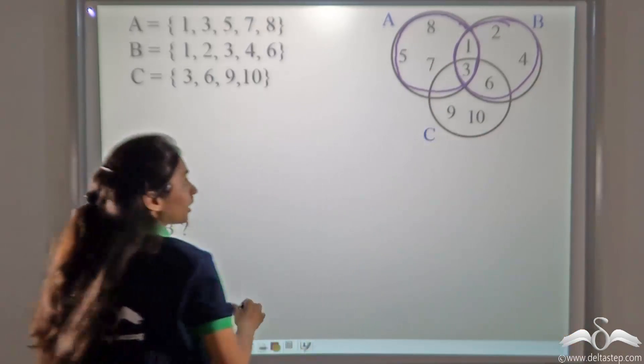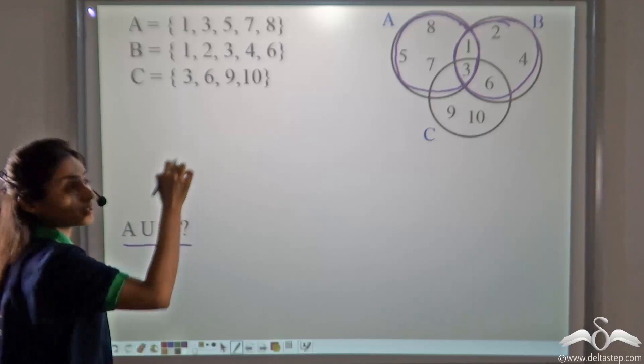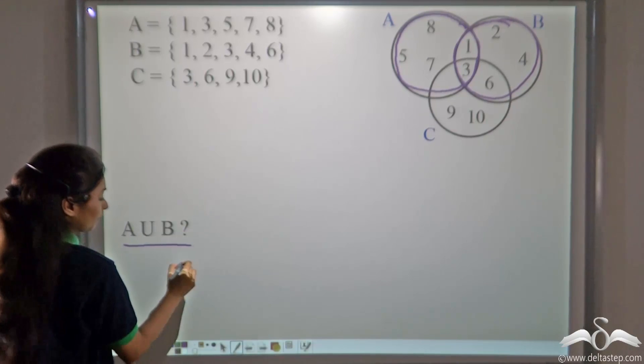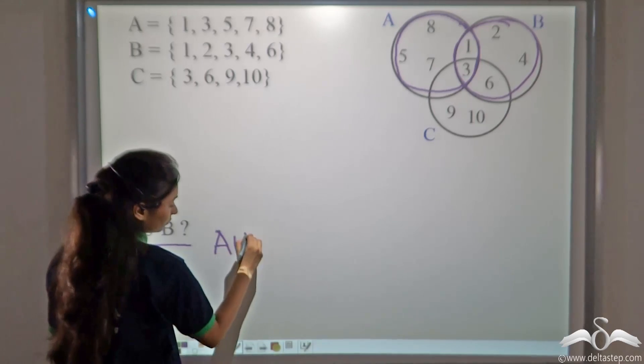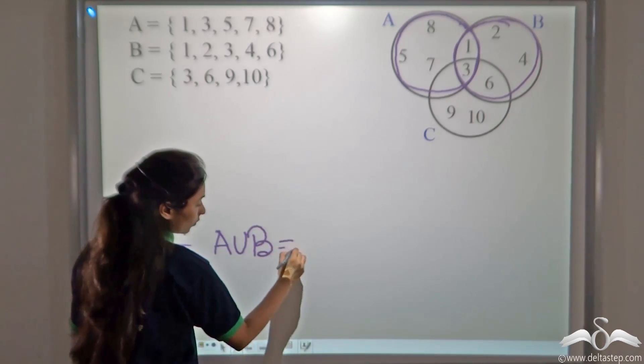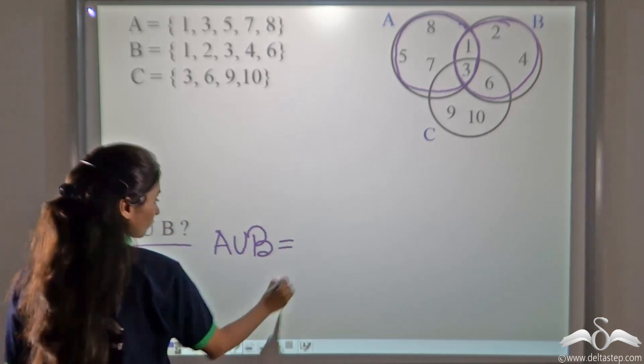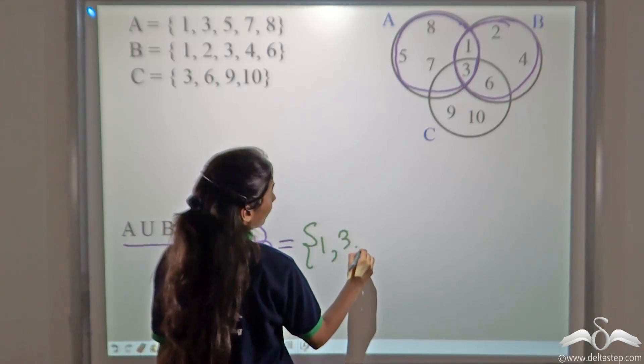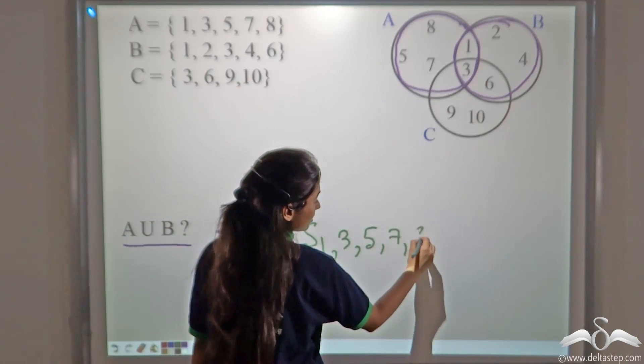A and B. When we do A union B, we write the set of elements present in A and then we write the set of elements present in B. What will it give us? 1, 3, 5, 7, 8.